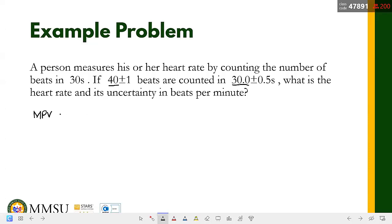Most probable value - so how do we get the beats per minute? That's beats divided by time, so 40 beats divided by 30 seconds. That is equal to... decimal na lang, so 1.3333 beats per...